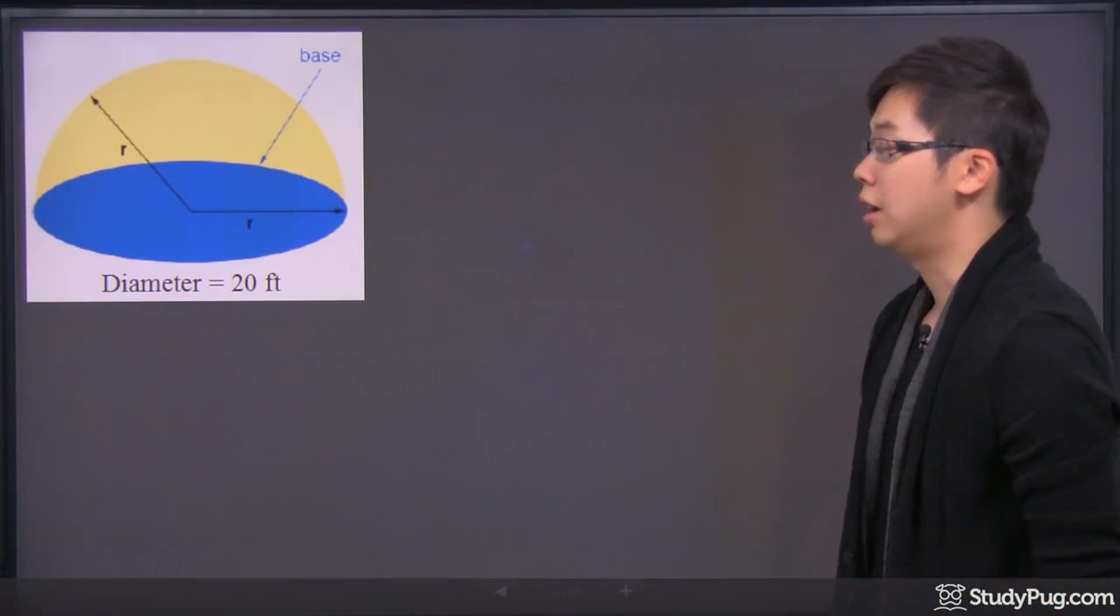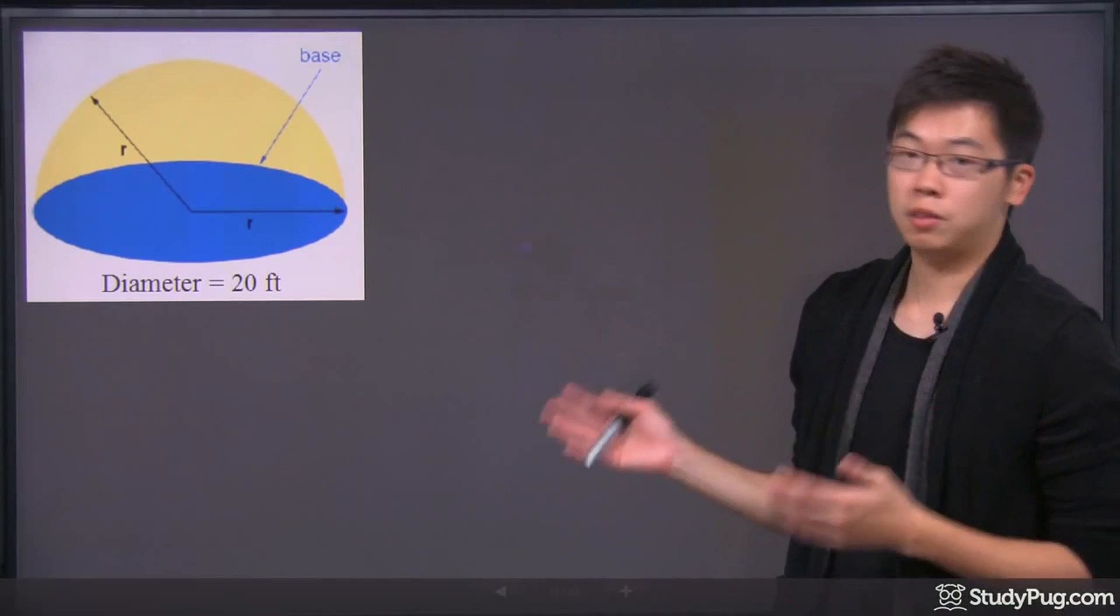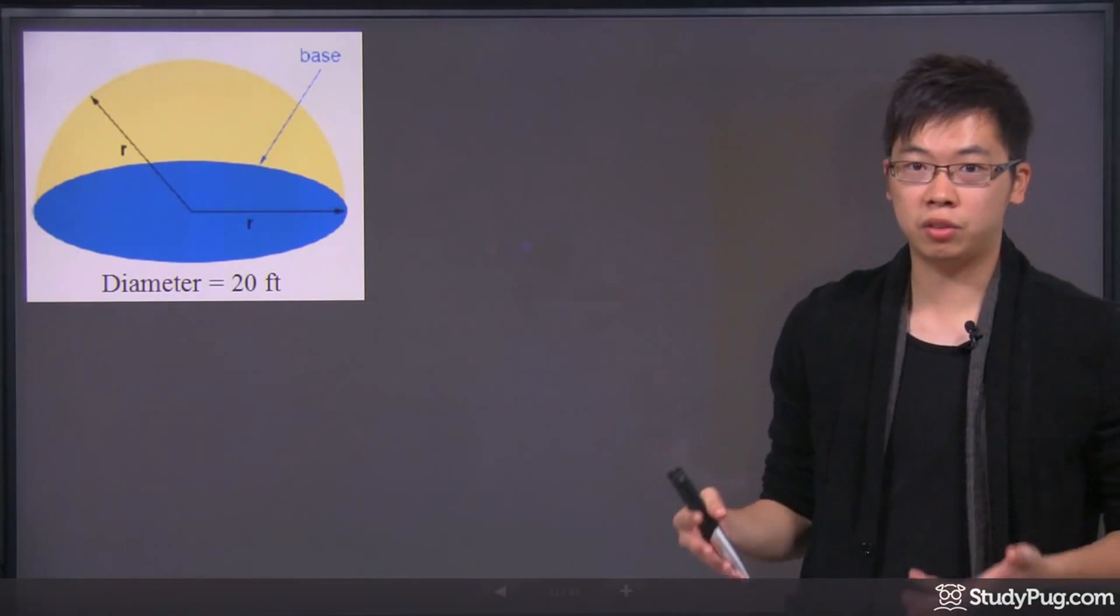Hi, welcome to this question right here. You're looking for the surface area and the volume, and it's a sphere, but it's not a complete sphere, it's only half of a sphere, right?